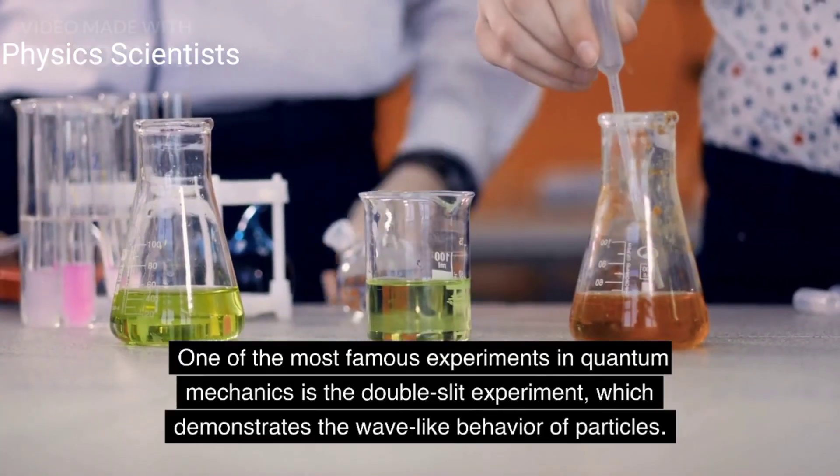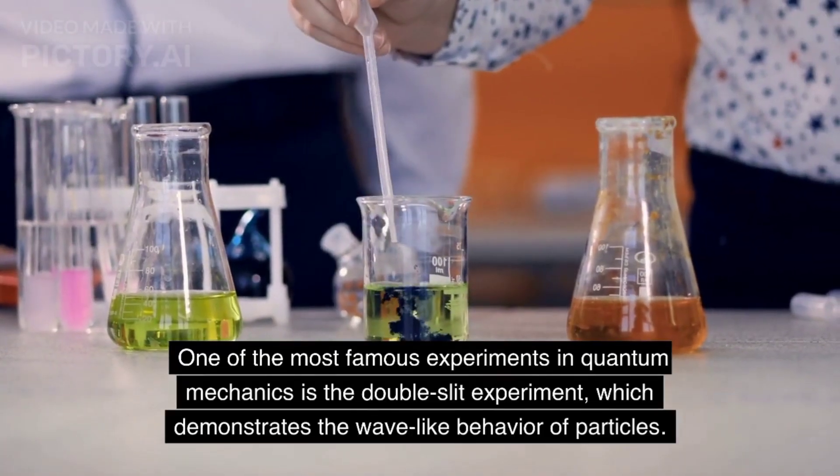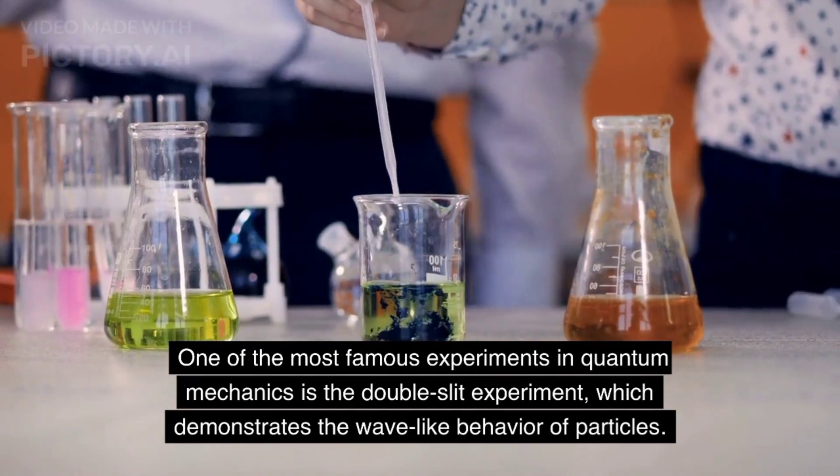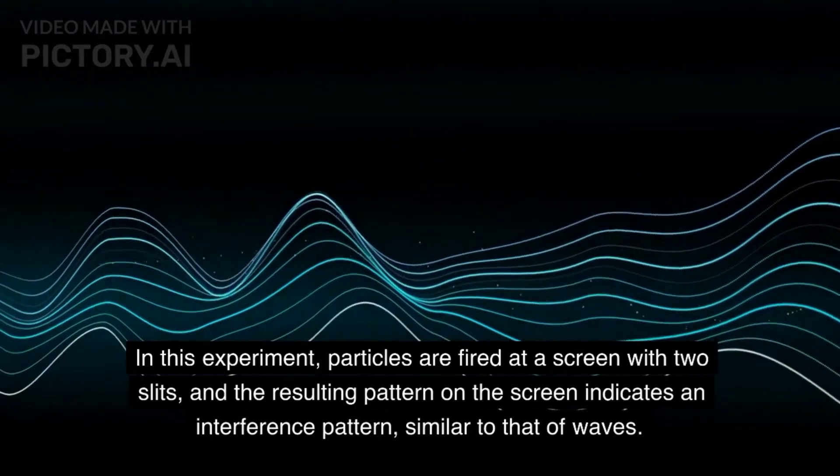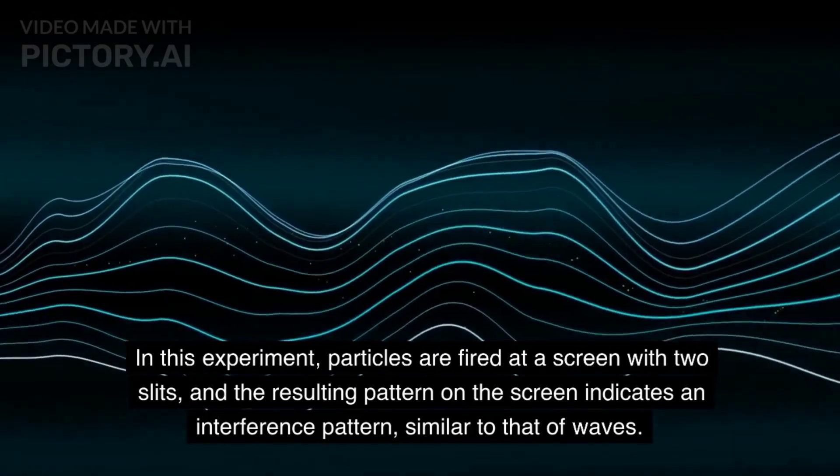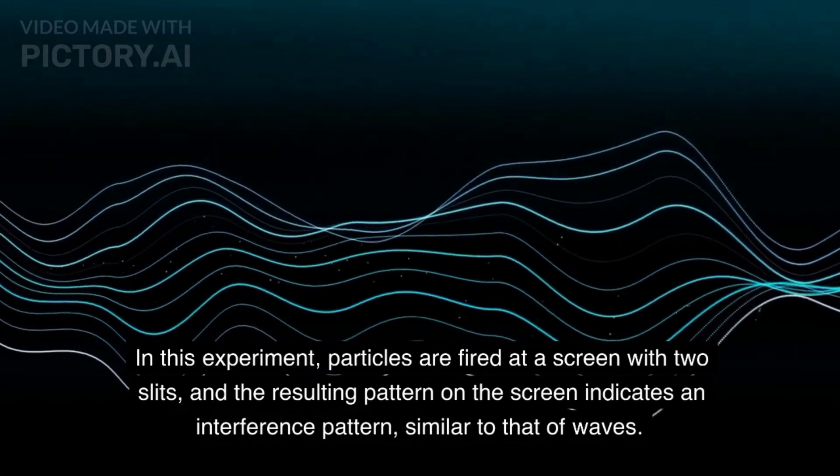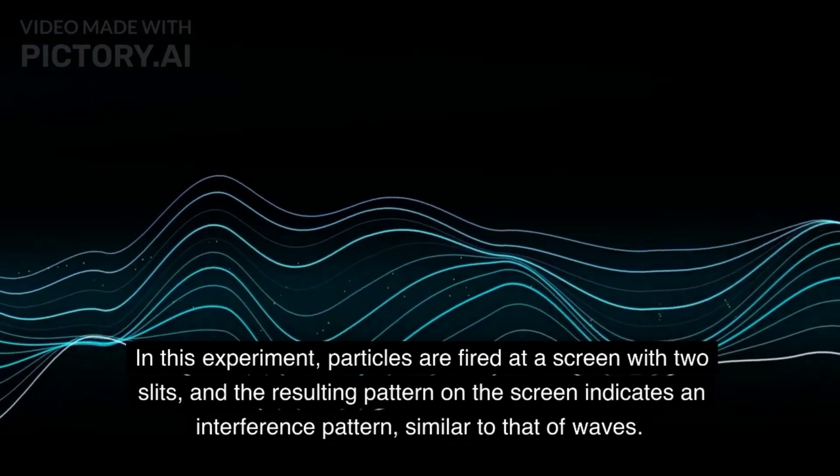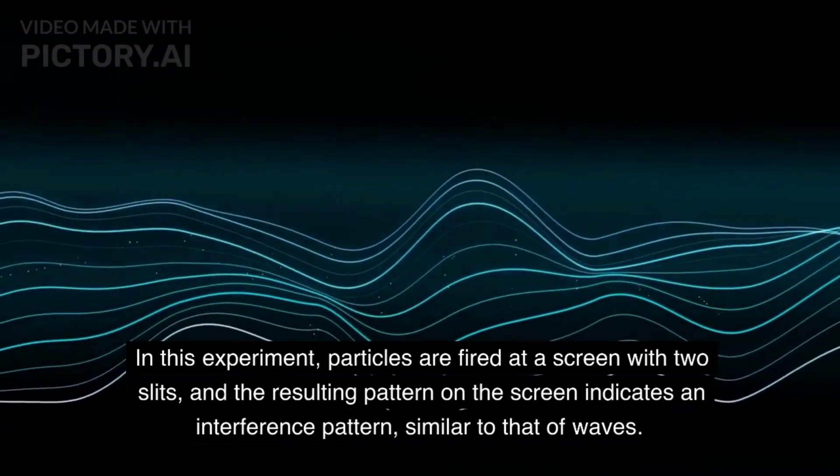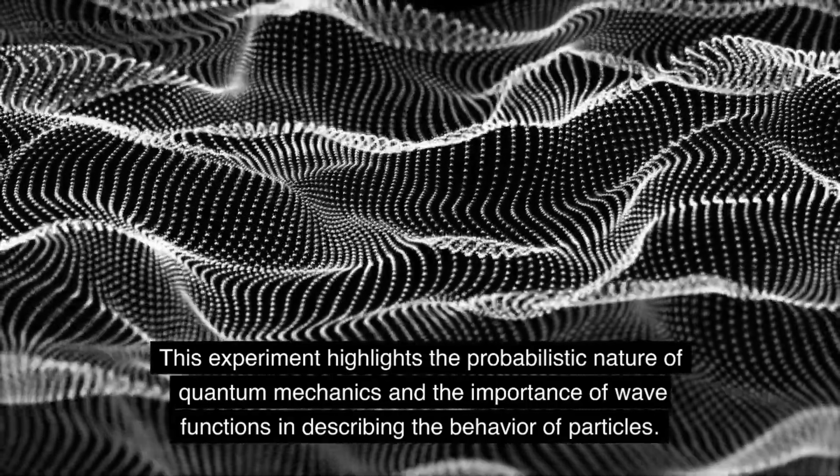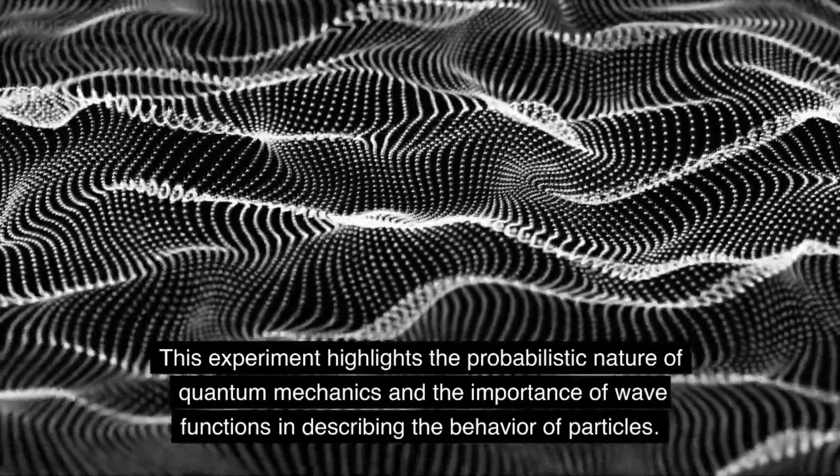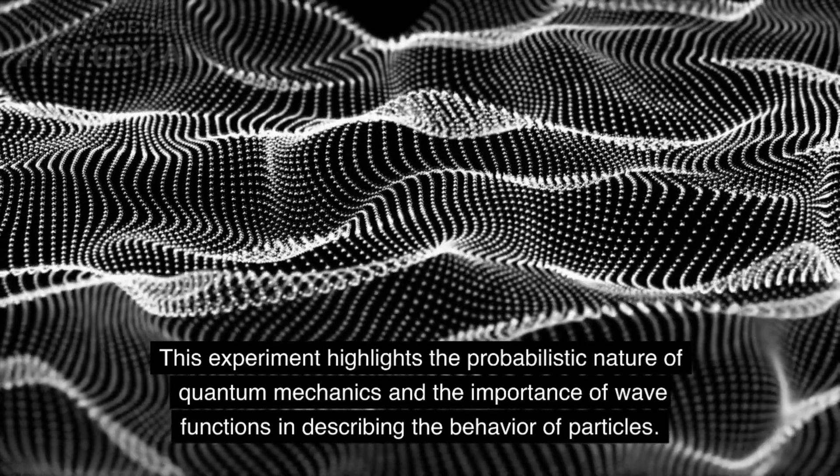One of the most famous experiments in quantum mechanics is the double-slit experiment, which demonstrates the wave-like behavior of particles. In this experiment, particles are fired at a screen with two slits, and the resulting pattern on the screen indicates an interference pattern, similar to that of waves. This experiment highlights the probabilistic nature of quantum mechanics and the importance of wave functions in describing the behavior of particles.